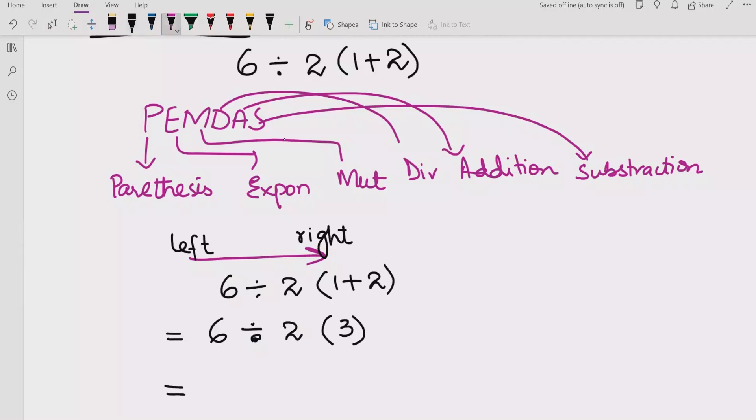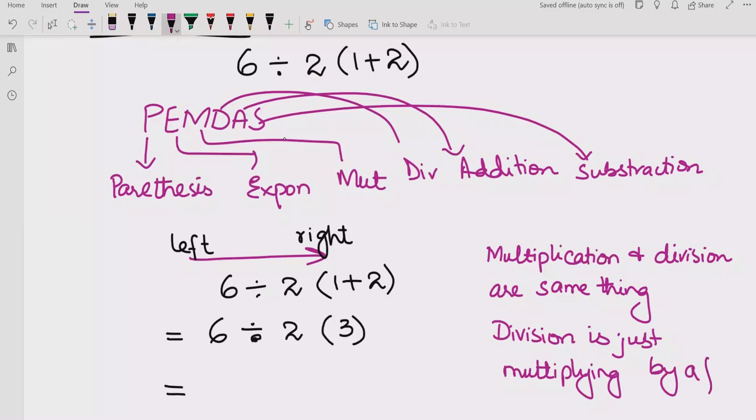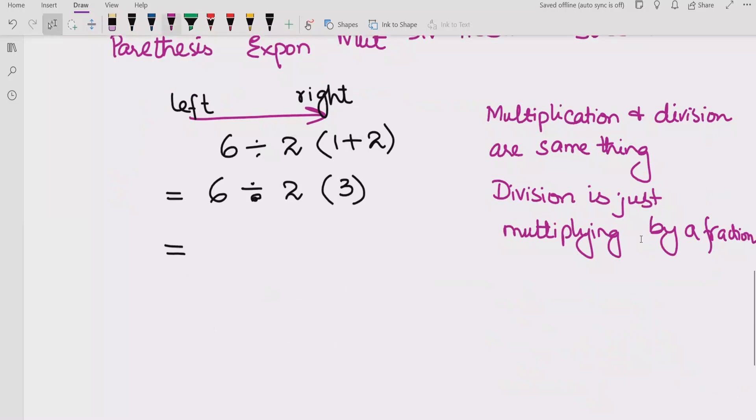Basically, multiplication and division are the same thing. How? Division is just multiplication by a fraction. We can say 6 divided by 2 is basically 6 multiplied by 1 over 2. So both are the same thing. But here we have 6 divided by 2, so first we will solve this part.